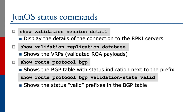The Junos status commands are very similar to the Cisco IOS ones. To find out the details of the connection to the RPKI servers, we do show validation session detail. To show the VRPs, we do show validation replication database. To find out the BGP table, show route protocol BGP. Cisco IOS indicates V for valid, I for invalid, and N for not found, whereas Juniper actually displays the full word valid, invalid, or unknown in the BGP table. Show route protocol BGP validation state valid will show all valid prefixes in the BGP table.